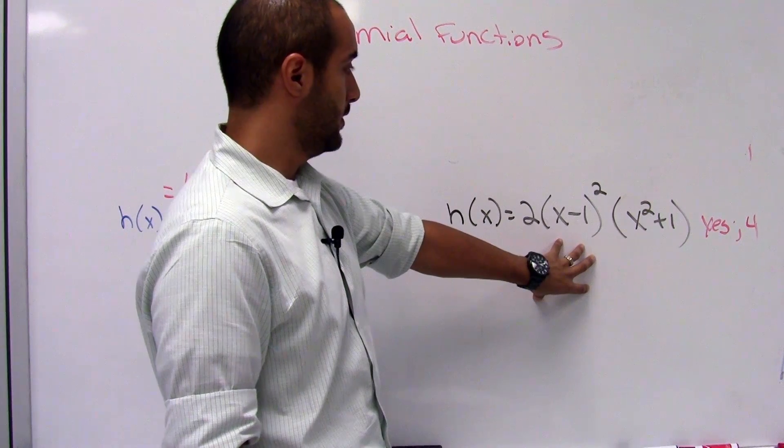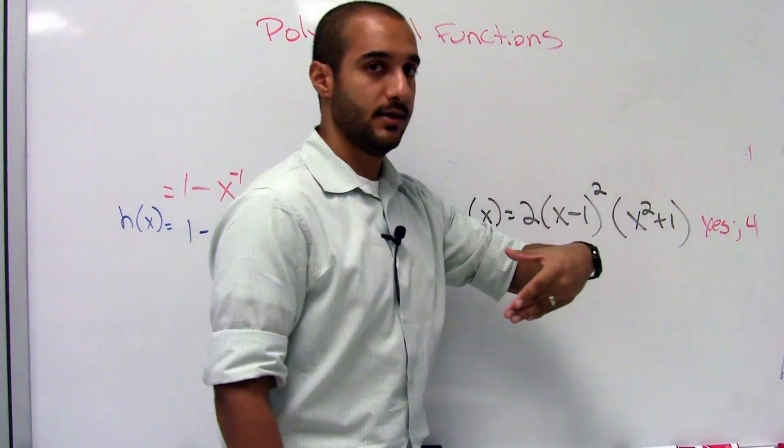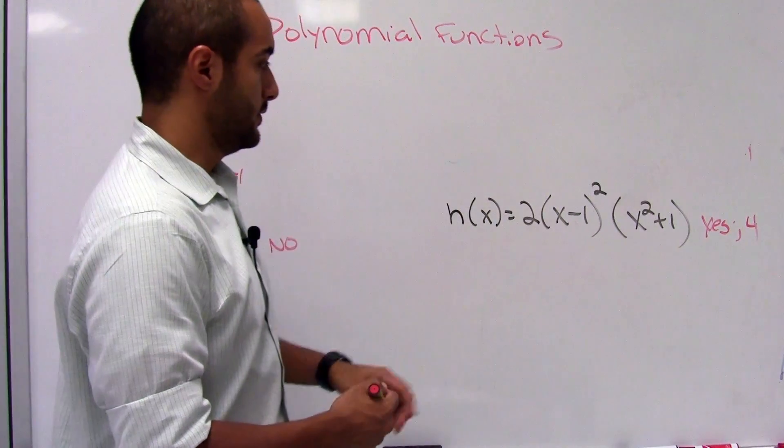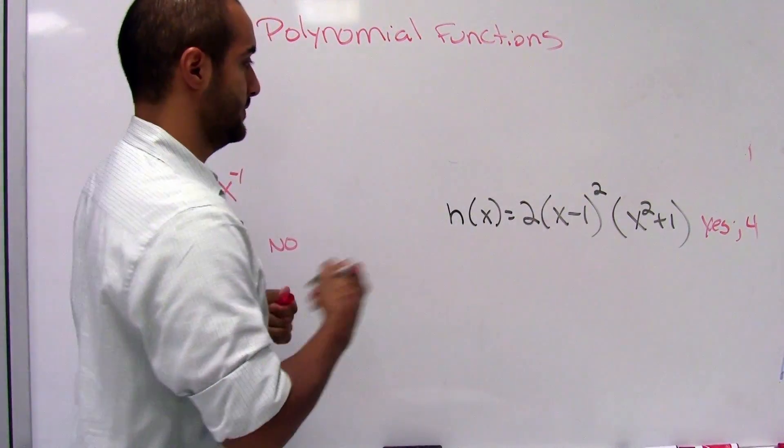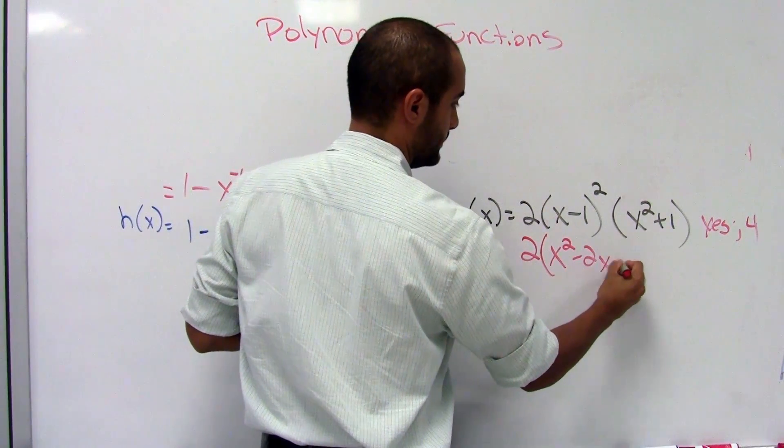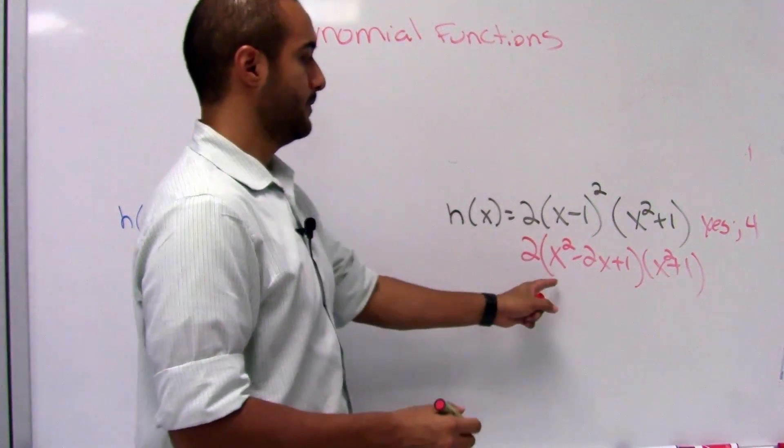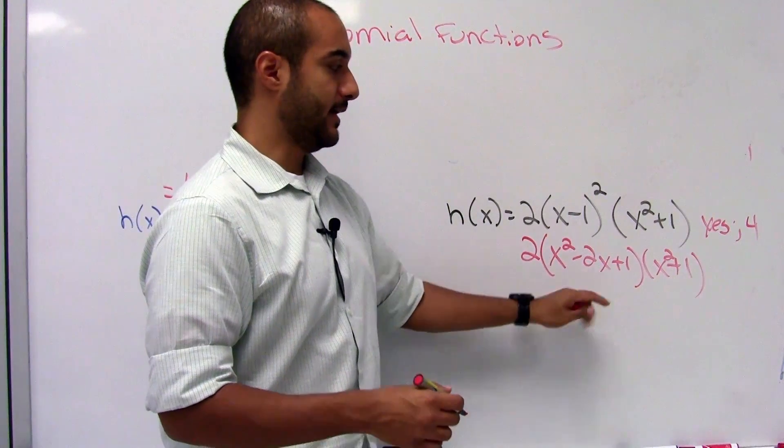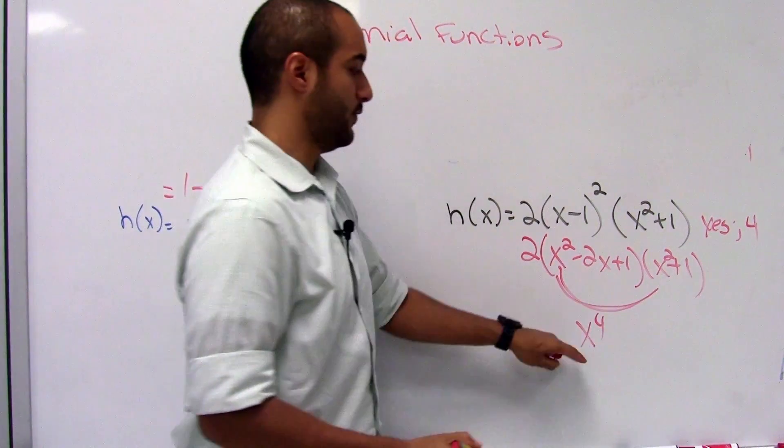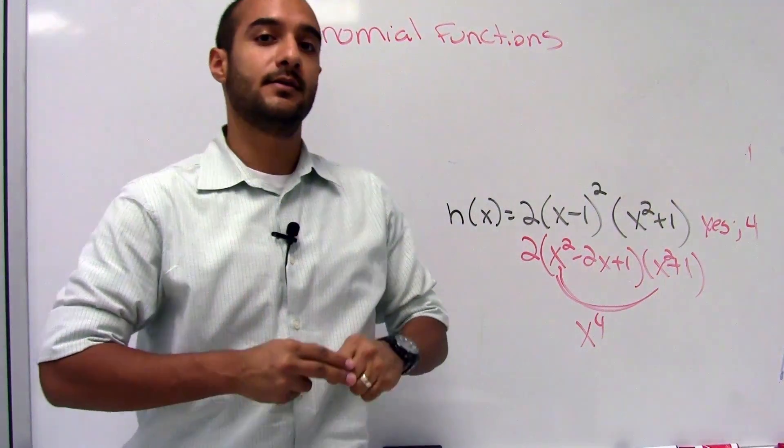Let's look at h. h says the following, two times blah blah blah blah. What we need to do is simplify this further to see if this is actually a polynomial, and so we'll go ahead and expand this. And when I distribute everything, I'll get that my highest power should come from multiplying these two, which is going to end up being x to the fourth, and that'll be your highest degree. So, like I said, I hope you got them right.